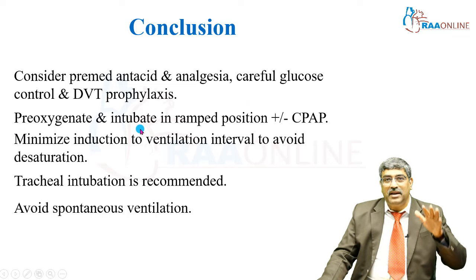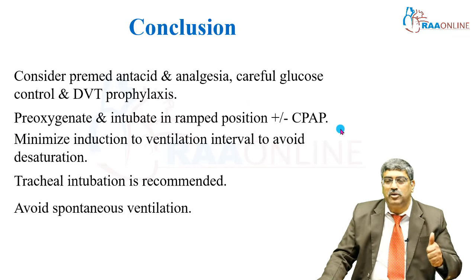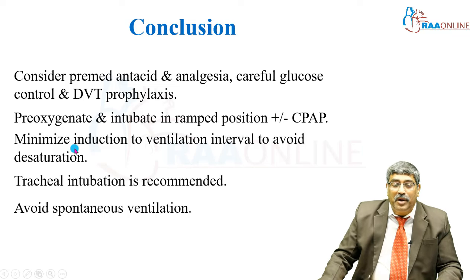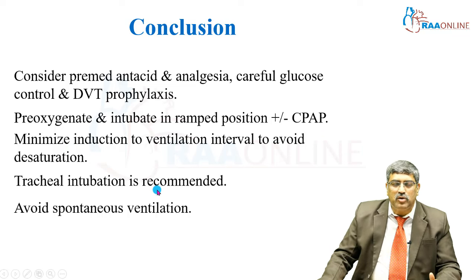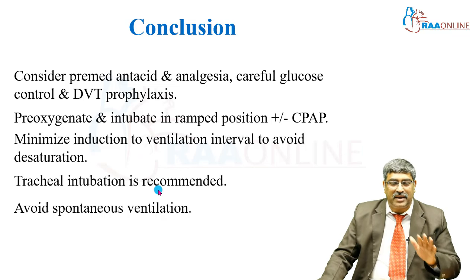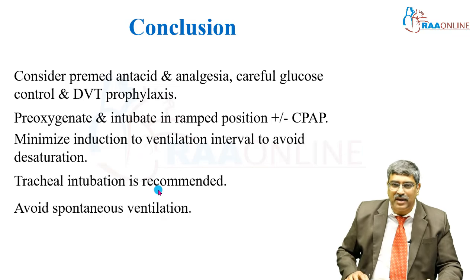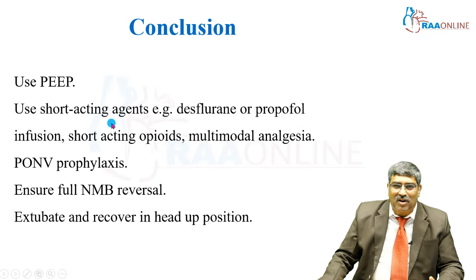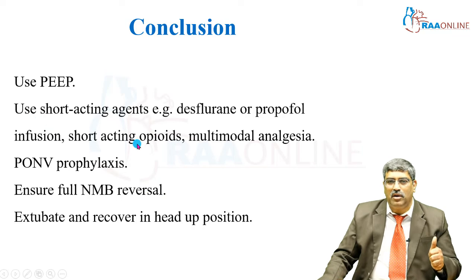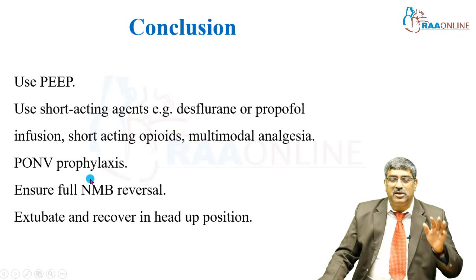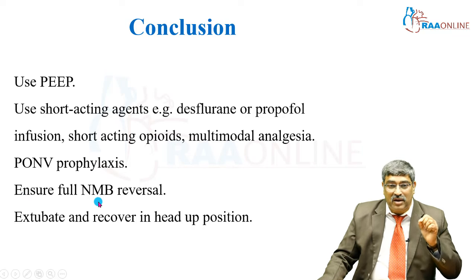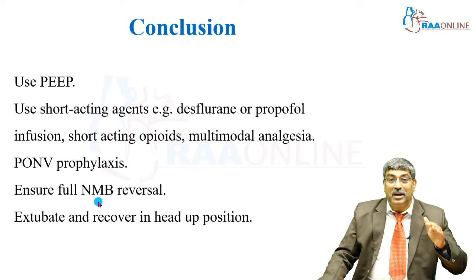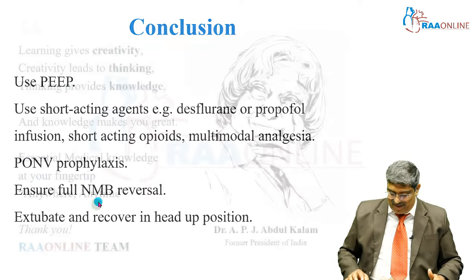Pre-oxygenate and intubate in the ramp position. Provision for continuous positive airway pressure should be available. Minimize induction-to-ventilation interval to avoid desaturation leading to hypoxia. Most obese patients require tracheal intubation. Avoid spontaneous ventilation, use PEEP — in fact higher PEEP. Use short-acting agents: desflurane, propofol, short-acting opioid remifentanil. Use multimodal analgesia and post-operative nausea and vomiting prophylaxis. Ensure full neuromuscular blocker reversal, and extubate and recover in the head-up reverse Trendelenburg position.